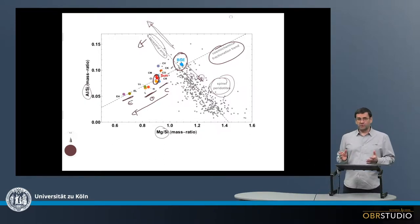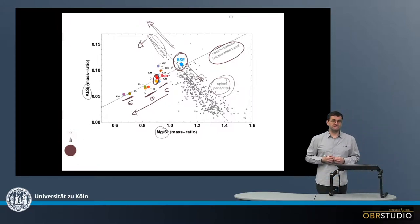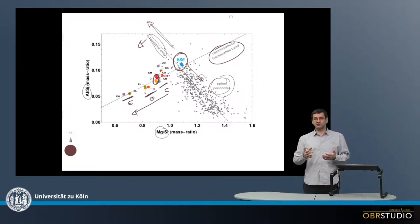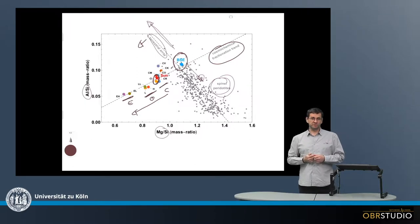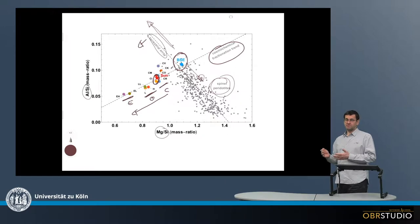One explanation for why enstatite or ordinary chondrites are enriched in silicon, for example, is that there was forsteritic olivine removed. But this is a difficult explanation, because it must have been substantial amounts, and we do not find a substantial amount of olivine elsewhere.